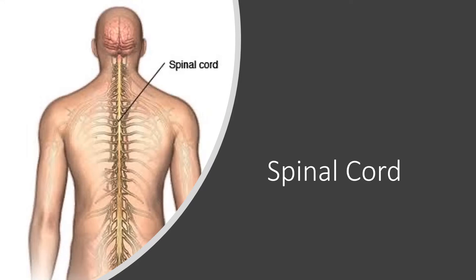Welcome to the fourth part of the chapter Control and Coordination. In the previous part, we studied about the structure of the brain, which is an important organ of the central nervous system.